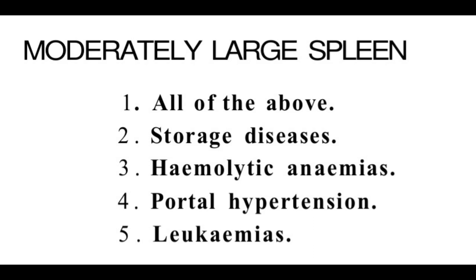Moderately enlarged spleen is considered to be from 13 cm to 18 cm. If the spleen appears within that range, it will be considered as moderately enlarged. Moderately enlarged spleen can be seen in storage diseases like hemochromatosis and fatty liver. Hemolytic anemia also causes moderately enlarged spleen. In portal hypertension, the spleen will enlarge moderately, and in leukemias as well.